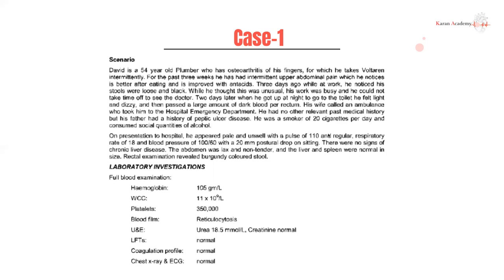On clinical examination he appears pale, unwell, and tachycardic. His respiratory rate is 18 and blood pressure is 100 over 60, which is borderline hypotensive. He has a 20 mmHg postural drop on sitting. There are no signs of chronic liver disease. The abdomen was lax and non-tender. Liver is normal in size. Rectal examination revealed burgundy-colored stool.